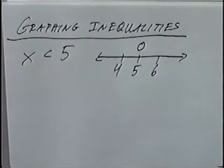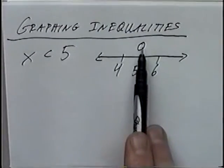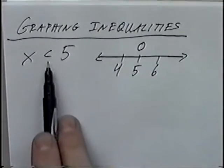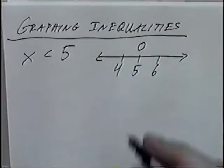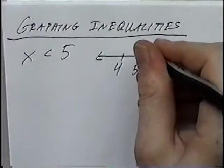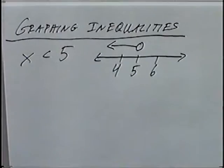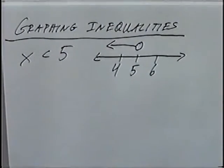The last part for the graph: the line will either go to the left or to the right. In this case we have less than — x is less than 5 — meaning we want the smaller numbers, so the line goes to the left. That will be the graph for the inequality x is less than 5.